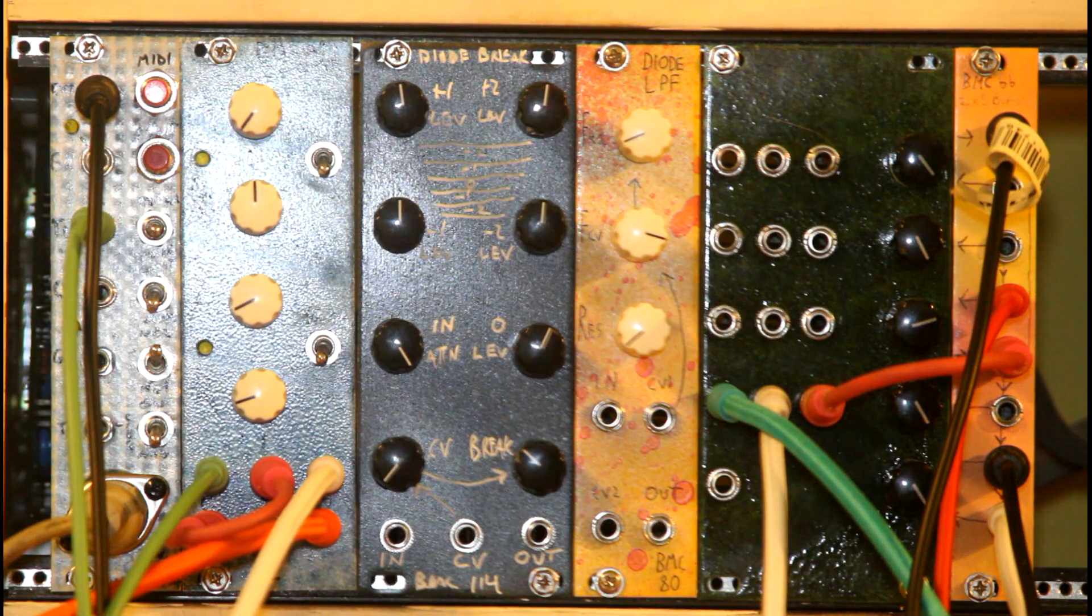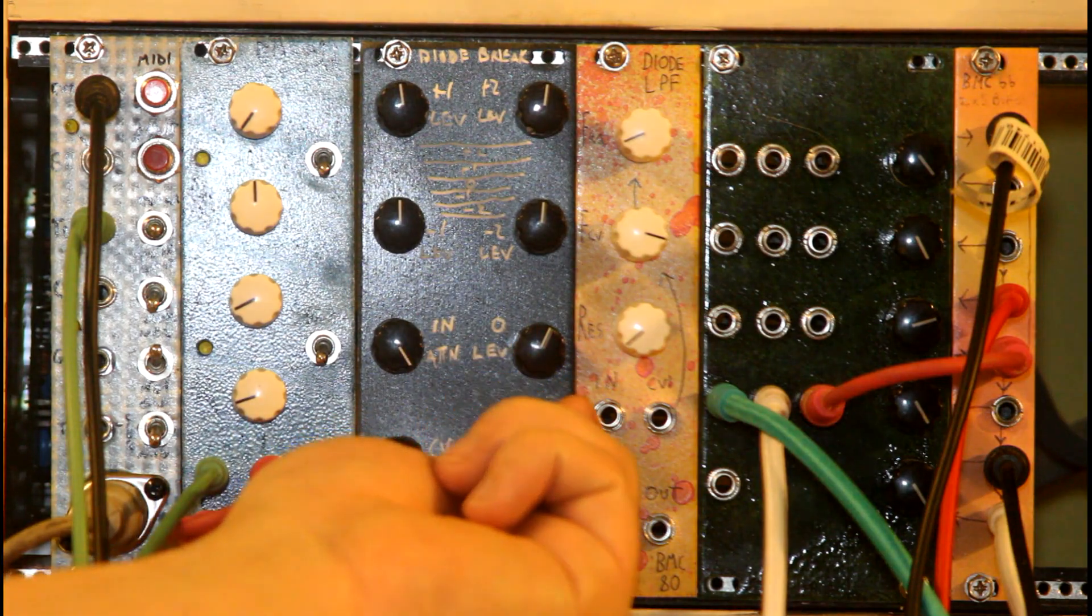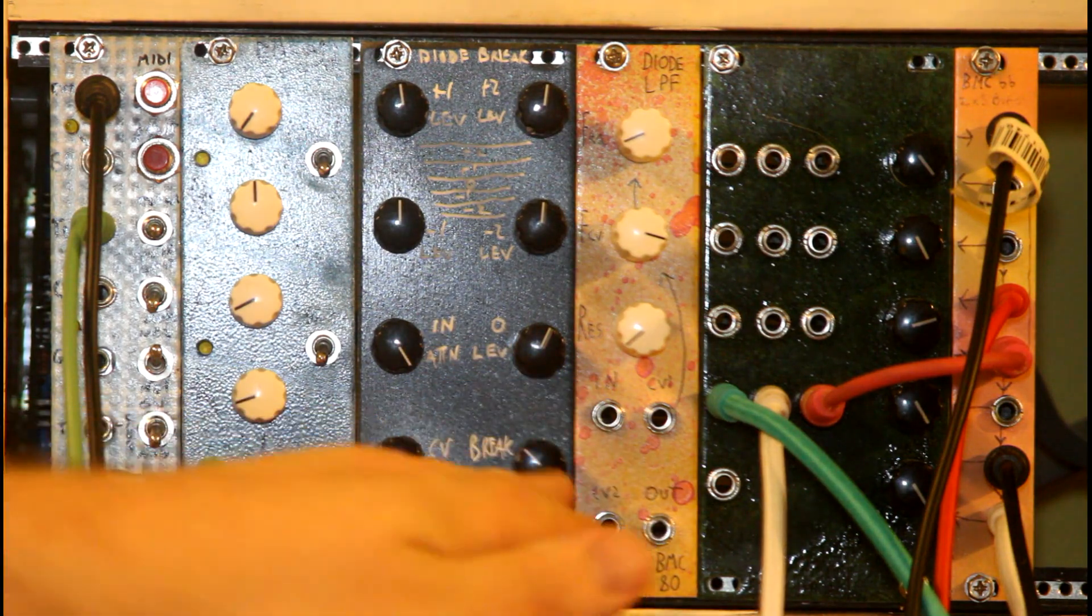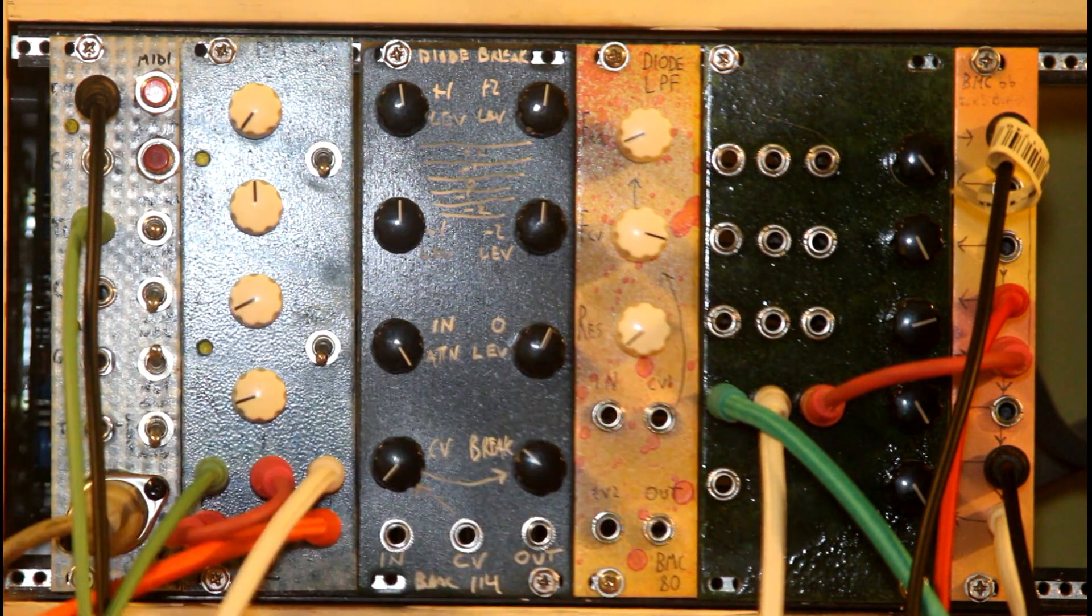And the thresholds for where these voltages break down, that's based on the brake voltage, which is this knob down here. You can use a control voltage to manipulate that brake voltage as well.